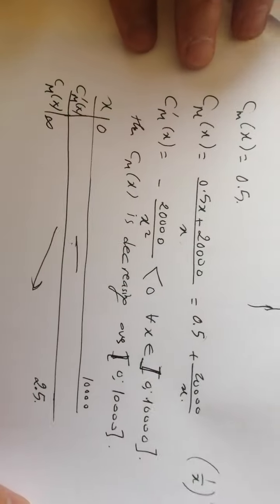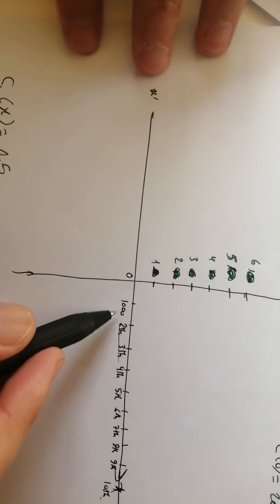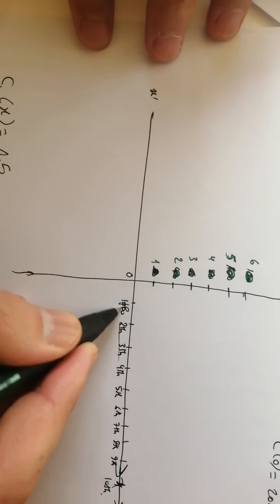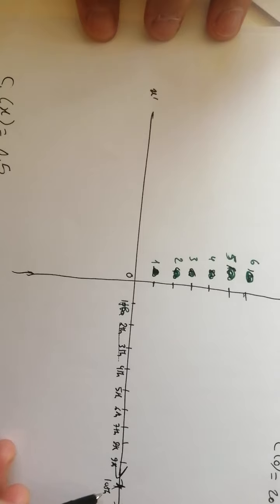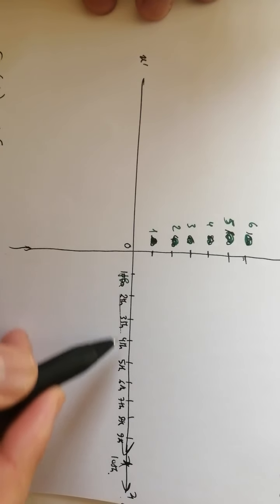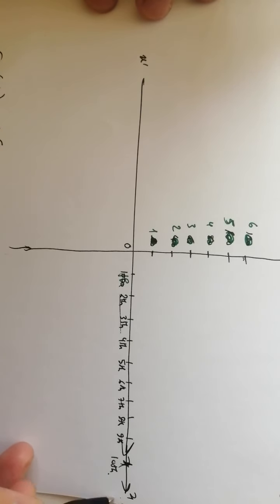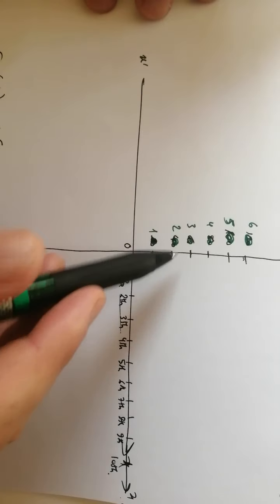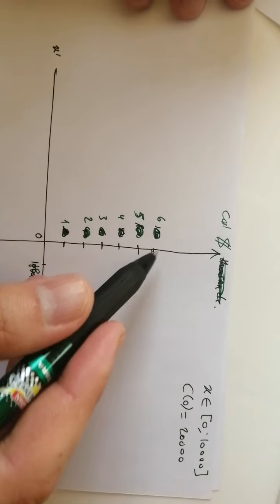We're going to set up the graph. I'll put it here with the interval 1,000 to 10,000. I'll mark 1, 2, 3, 4, 5, 6 thousand on the x-axis. On the y-axis, I'll put the dollar amounts: 1, 2, 3, 4, 5, 6 dollars.